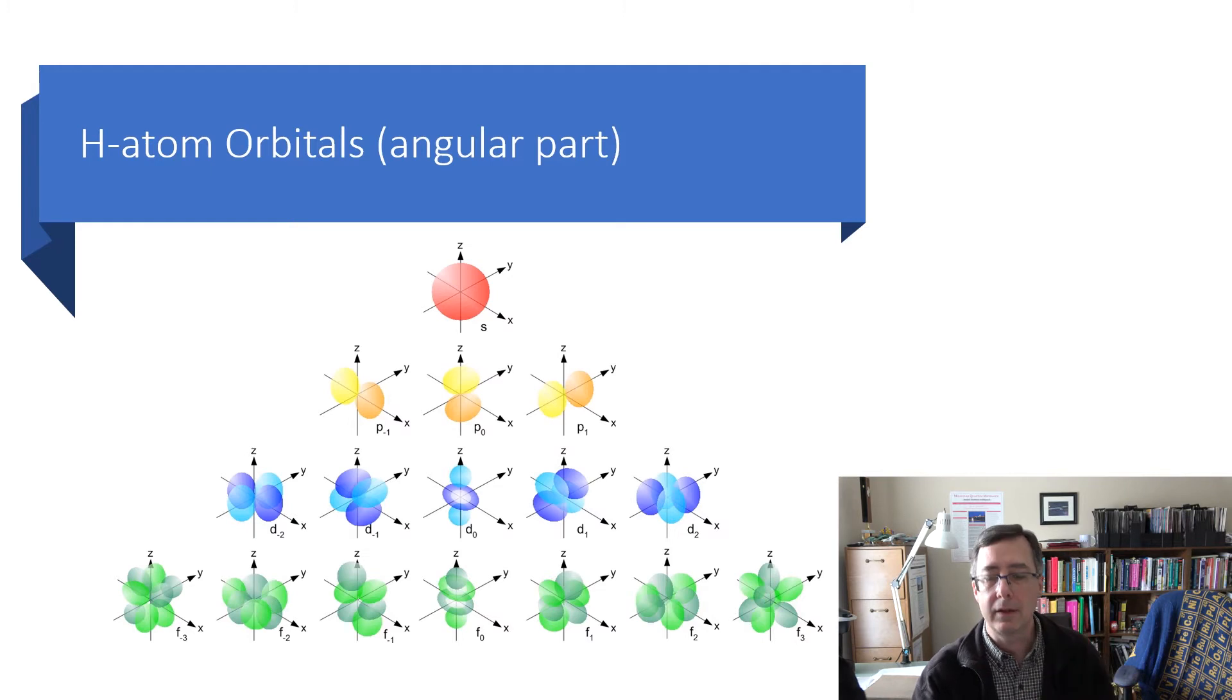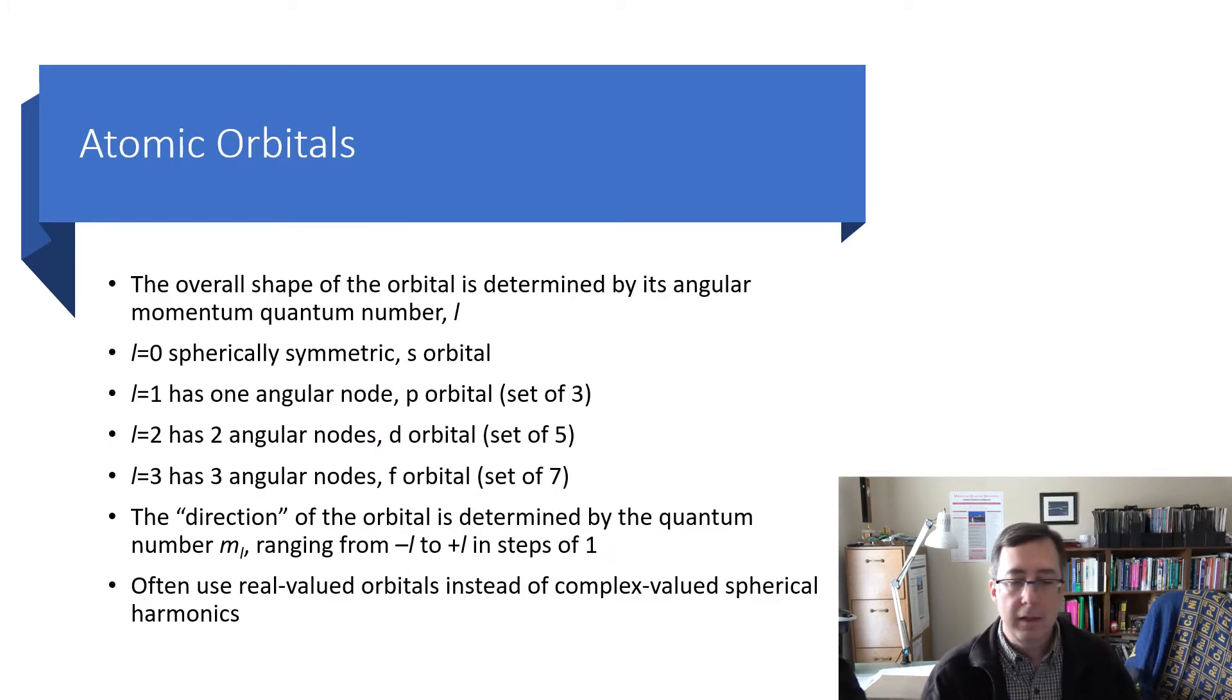The shape depends on the angular momentum L. So, if L equals zero, it's spherically symmetric. That's that S orbital we looked at. If L equals one, you have one angular node. That's a P orbital. There's a set of three of those.